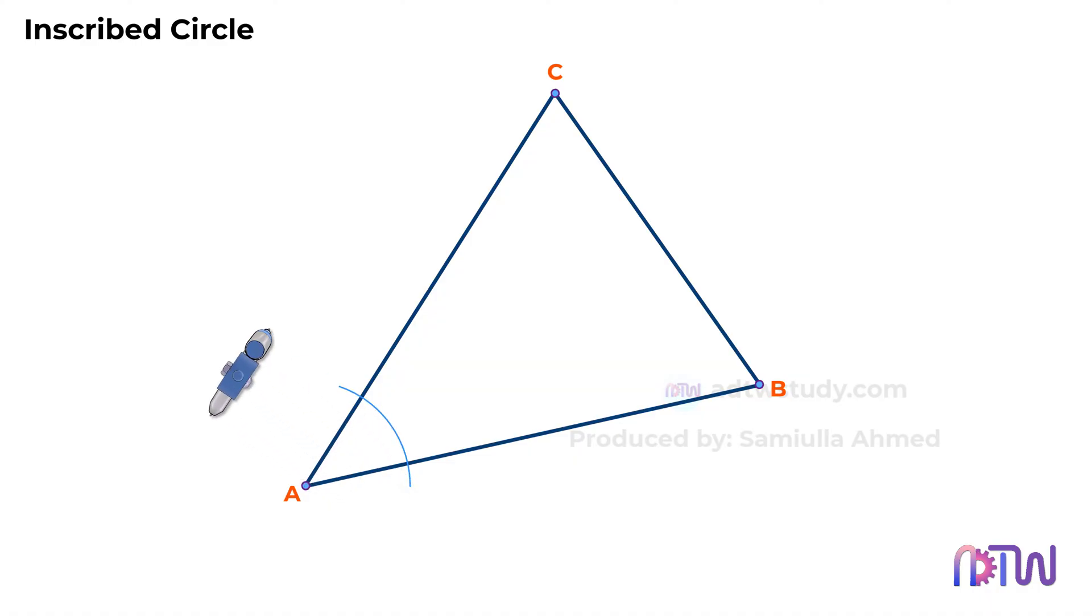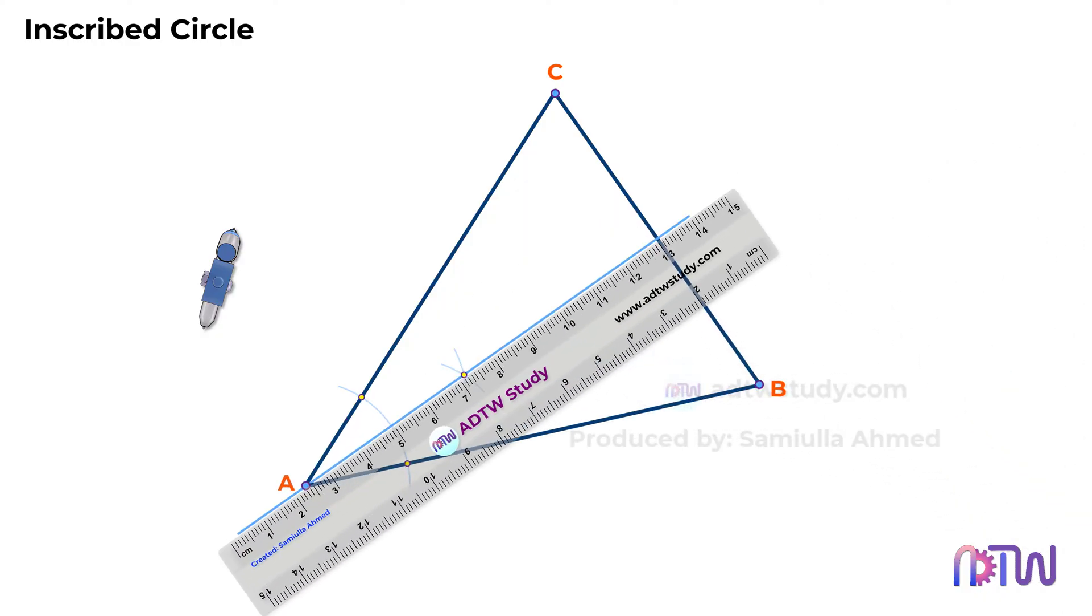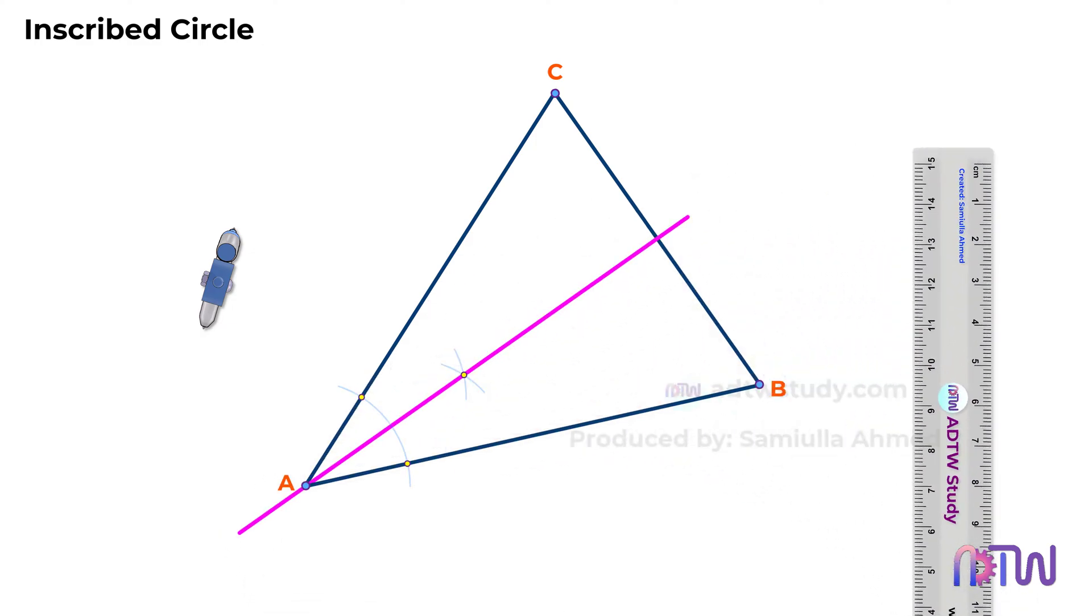After this, place the compass at these intersection points and cut the arcs as shown. In the end, draw a line passing through this new intersection point obtained from point A of the triangle. This line divides the angle at point A into two halves.